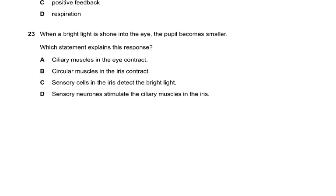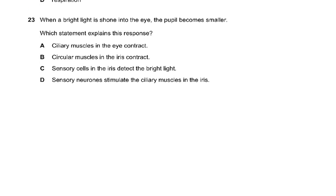Question 23: When a bright light is shone into the eye the pupil becomes smaller. Which statement explains the response? Sensory cells in the iris detect the bright light? No - sensory cells in the iris, never. It's the retina which detects light.